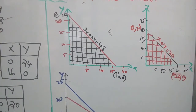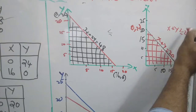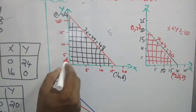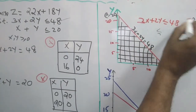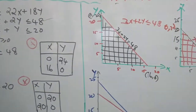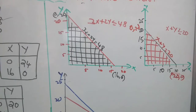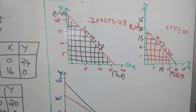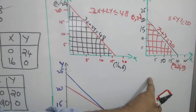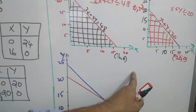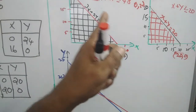Any point in the region below x plus y equals 20 satisfies x plus y less than or equal to 20. We require the combined feasible region satisfying both constraints simultaneously. We construct both constraints as equations on a single graph to determine the combined feasible region.